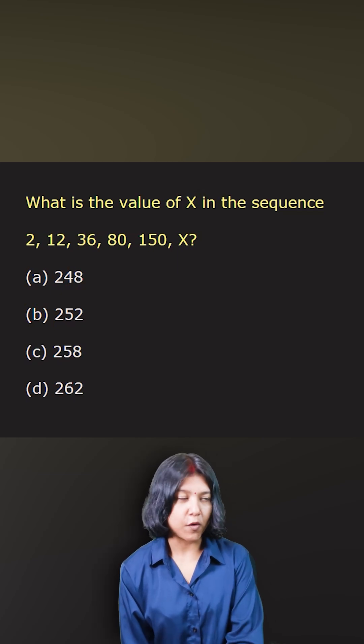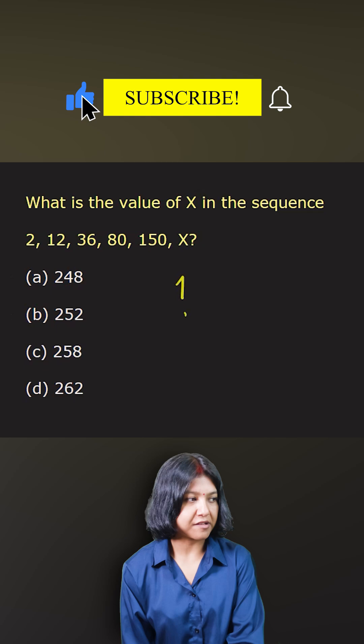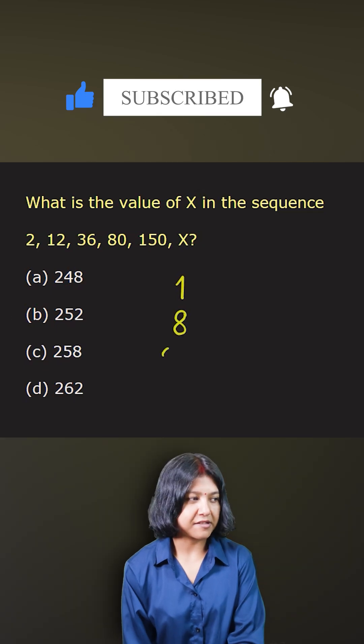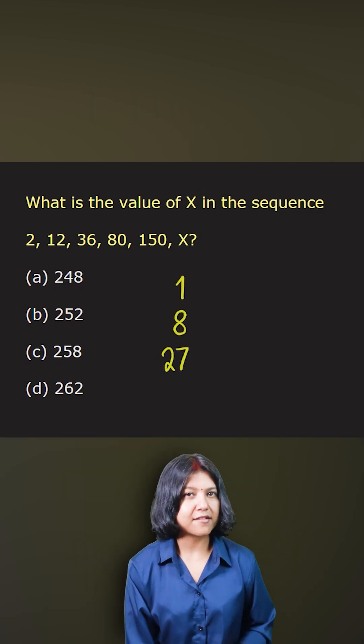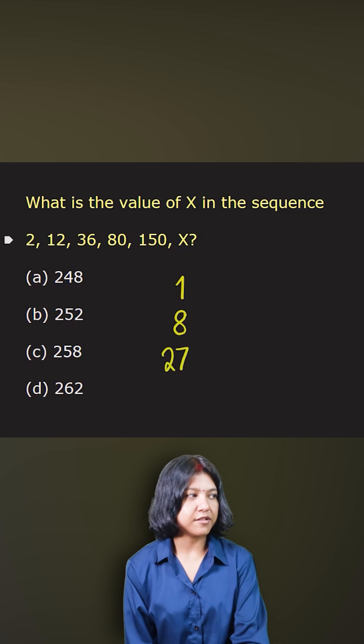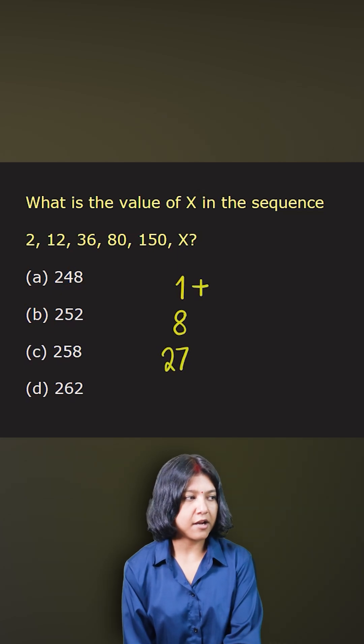Think of cube of 1 which is 1, cube of 2 is 8, cube of 3 is 27. I want to analyze if there's any pattern here. The first number is obtained by adding 1, the second number by adding 4, the third number by adding 9.